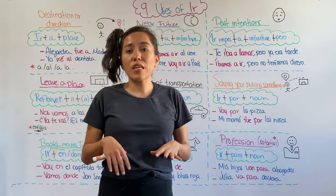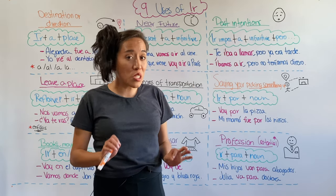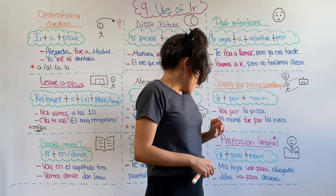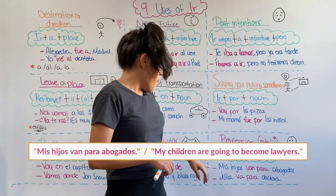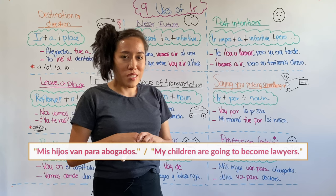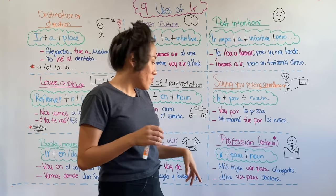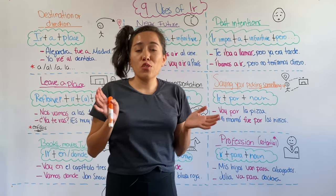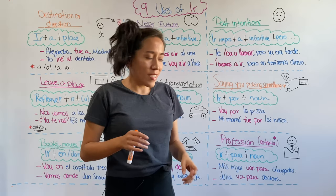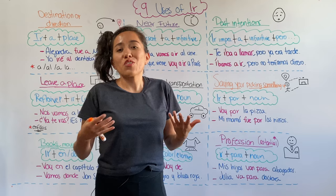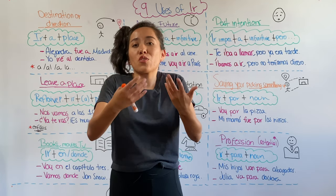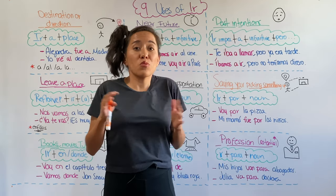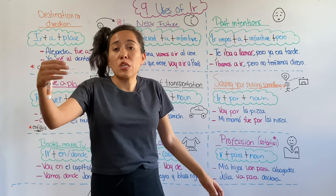Finally, you can also use ir to talk about the potential profession of a person — in other words, what you think a person is going to become. For example, mis hijos van para abogados — my children are going to become lawyers. Or Julia va para doctora — Julia is going to become a doctor. In some cases you're just making a hypothesis; in other cases, you know that person is already studying or working in that field.